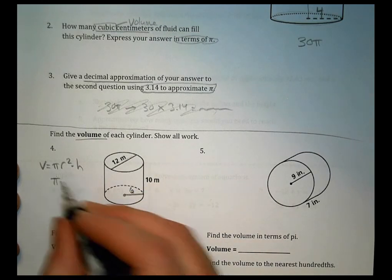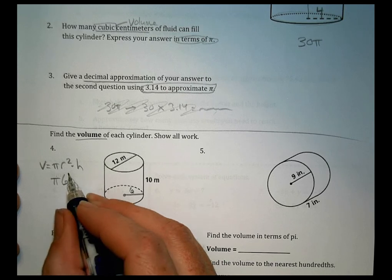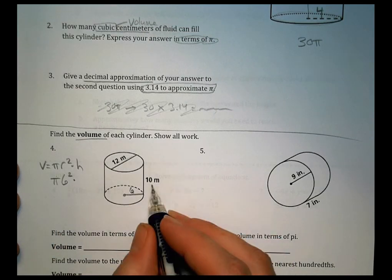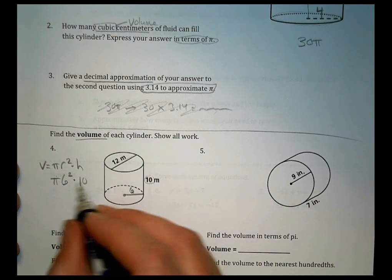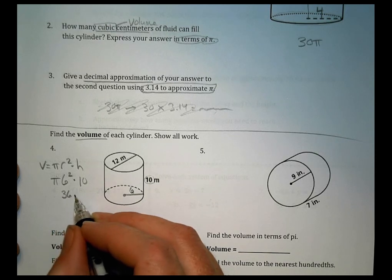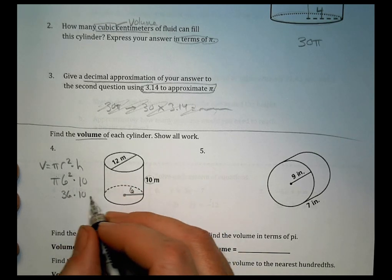Now, we know we have pi, the radius is 6, so 6 squared times the height, which is 10. 6 squared is 36 times 10, and still times pi.